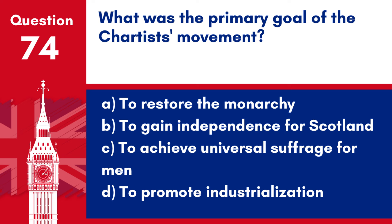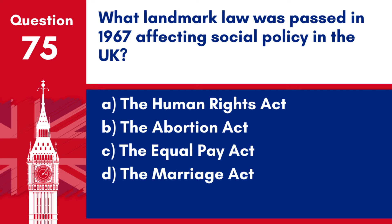Answer: c. To achieve universal suffrage for men. The Chartists were a working-class movement in the 19th century that sought political reforms and voting rights.